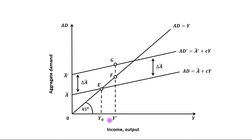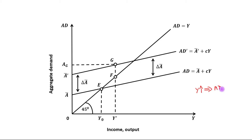Due to this, AD will increase to level OAG. You should also observe that the gap between aggregate demand and output has been reduced to GF. The reason is that output level increased, which caused AD to increase, but the change in AD was less than the change in income because the value of MPC is less than one.